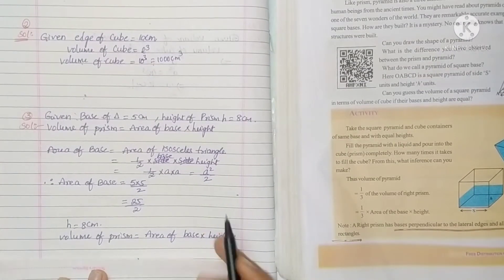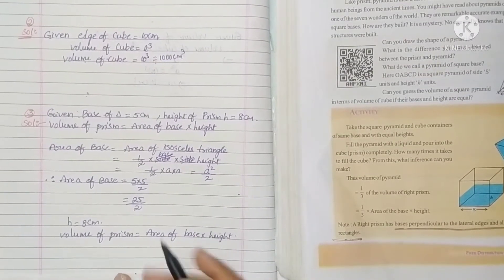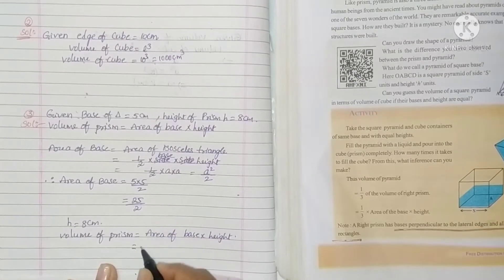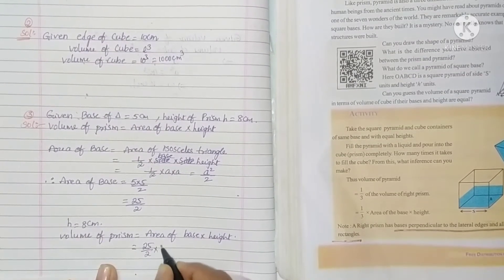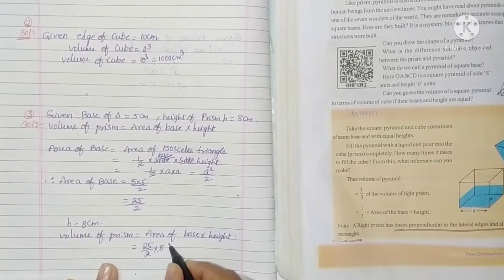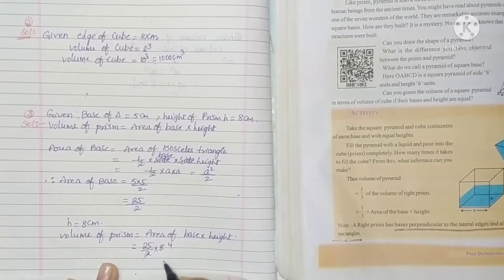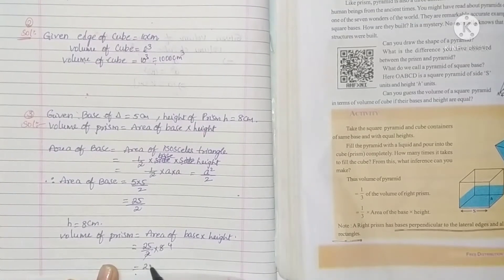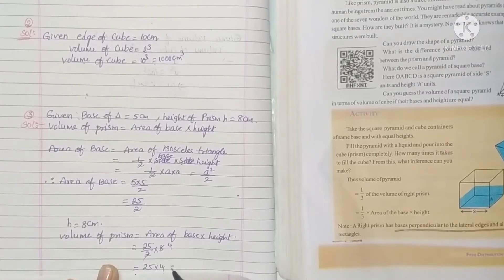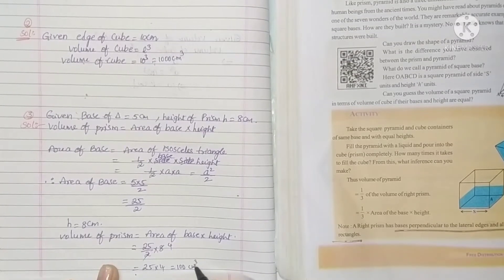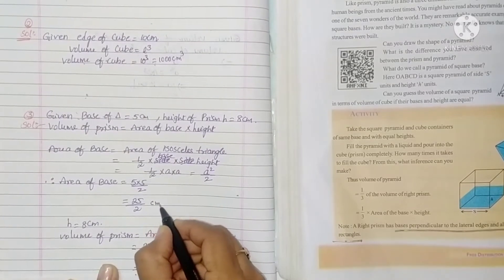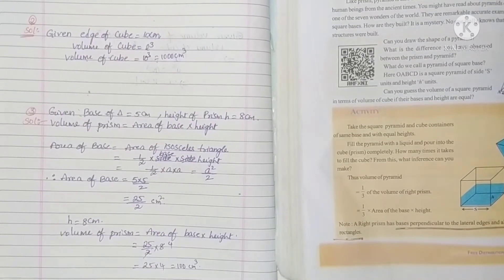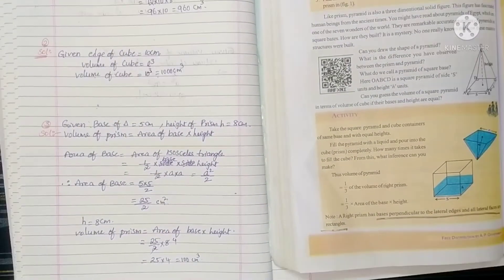Volume of prism = area of base into height. Area of base is 25 by 2, into height 8. The 2 and 8 give 4, so it is 25 into 4 = 100 cubic centimeters.